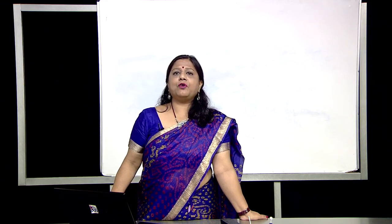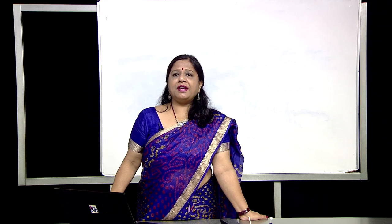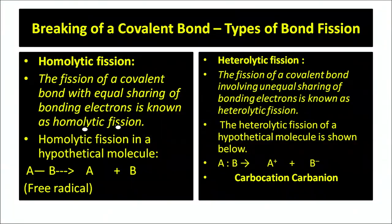Breaking of covalent bond — types of bond fission. When breaking a covalent bond, there are two types: homolytic fission and heterolytic fission. The fission of a covalent bond with equal sharing of bonding electrons is known as homolytic fission, whereas heterolytic fission involves unequal sharing of bonding electrons.